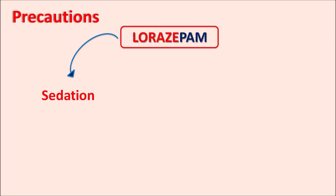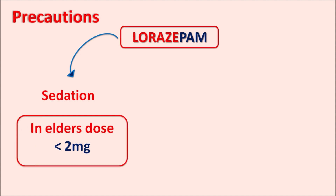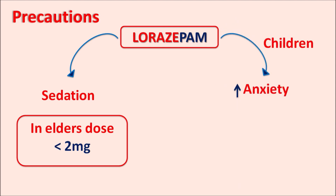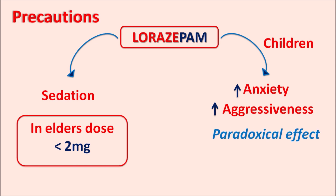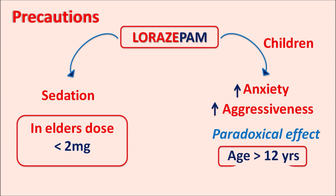Lorazepam can increase sedation and produce amnesia, so it should be given carefully to elderly patients. In the elderly, the dose should be less than 2 mg to minimize severe sedation, confusion, and amnesia. When given to children, lorazepam can produce paradoxical effects — opposite to its expected actions — such as increased anxiety and increased aggressiveness. Therefore, careful monitoring is required, and this drug is administered to children only above the age of 12 years.